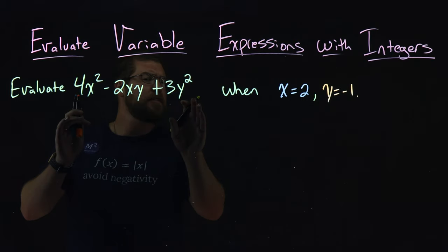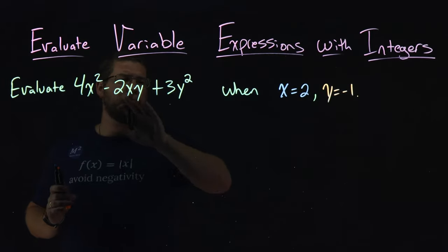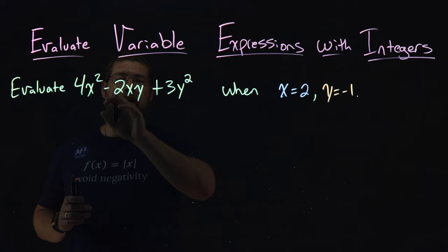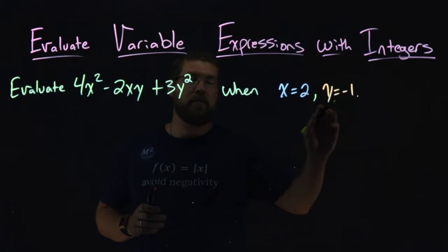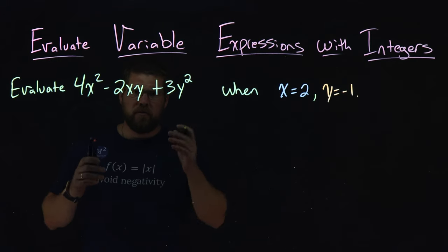When we have this expression here, my first step is I'm going to rewrite this expression, but every single time I see an x, I'm going to write a 2, and every single time I see a y, I'm going to put a negative 1 in there. So let's go do that.